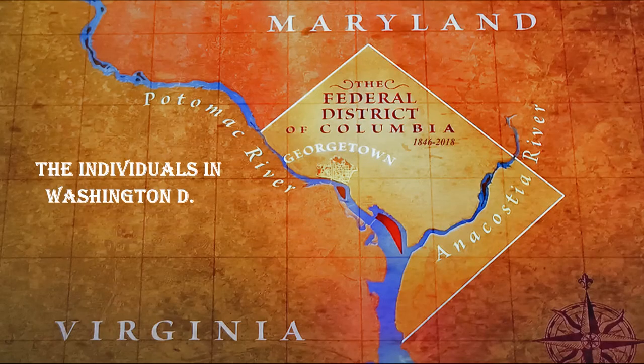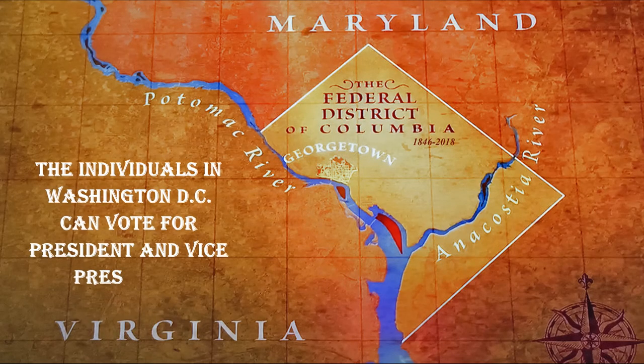Amendment 23: Passed in 1961, the Twenty-Third Amendment allows U.S. citizens that live in the District of Columbia the right to vote for electors of the President and Vice President.